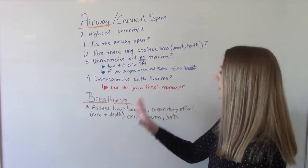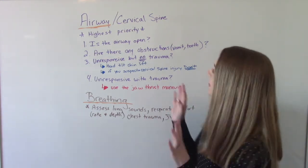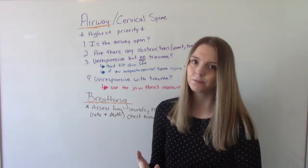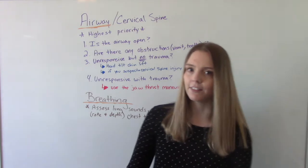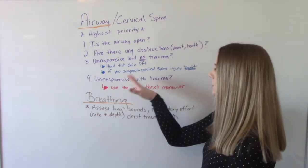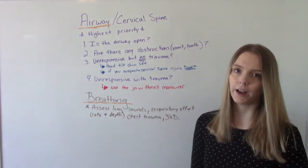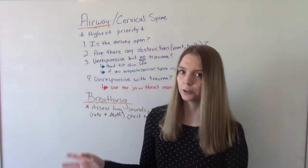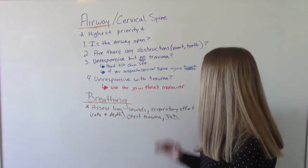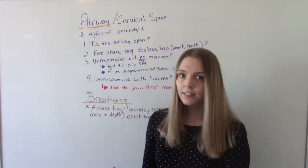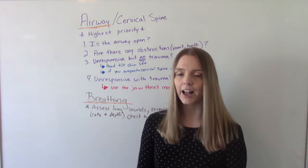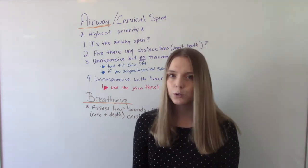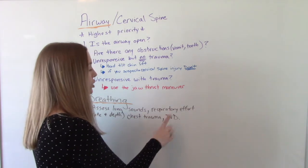The head-tilt chin lift is contraindicated if you suspect a cervical spine injury — that's why it's airway slash cervical spine, because you need to assess that before opening the airway. If the patient is unresponsive with obvious evidence of trauma, use the jaw thrust maneuver instead. After assessing the airway, B is for breathing: assess lung sounds, respiratory effort, rate and depth, whether breathing is shallow or deep, any obvious chest trauma like a broken rib or stab wound, and jugular venous distension.